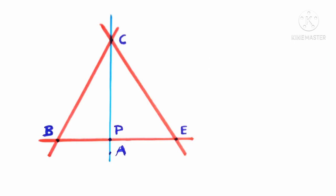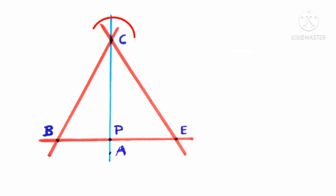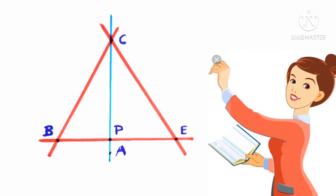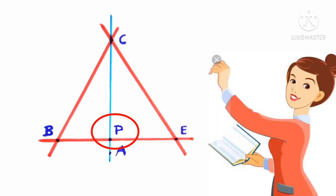Children, look at this figure. Here AC and BC intersect at the point C. AC and EC also intersect at the point C. BP and CP intersect at the point P. CP and EP also intersect at the point P.